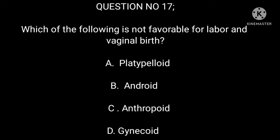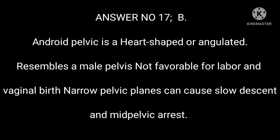Question number 17. Which of the following is not favorable for labor and vaginal birth? Answer number 17: B. The android pelvis is heart-shaped or angulated, resembles a male pelvis, and is not favorable for labor and vaginal birth. Narrow pelvic planes can cause low descent and mid-pelvic arrest.